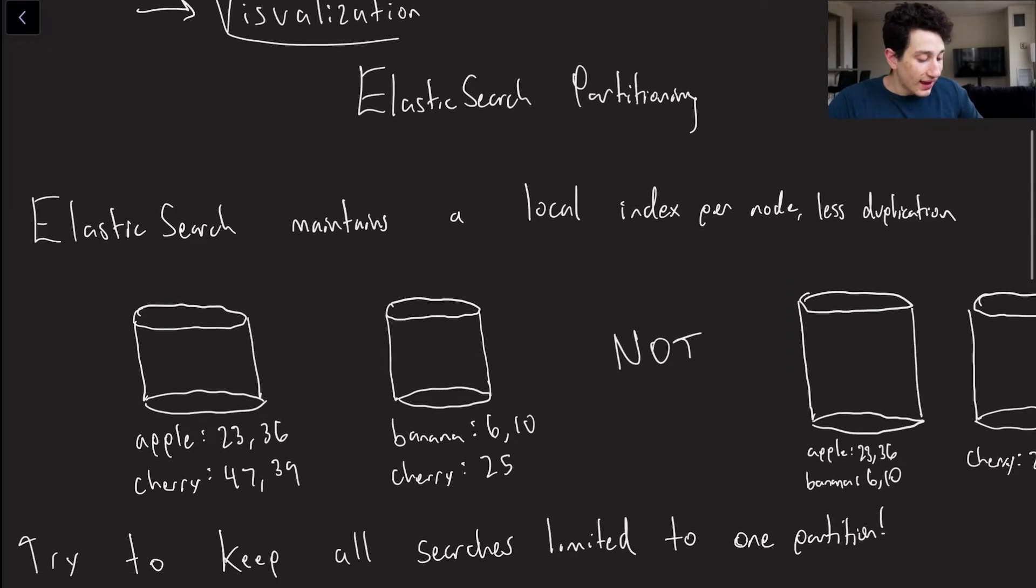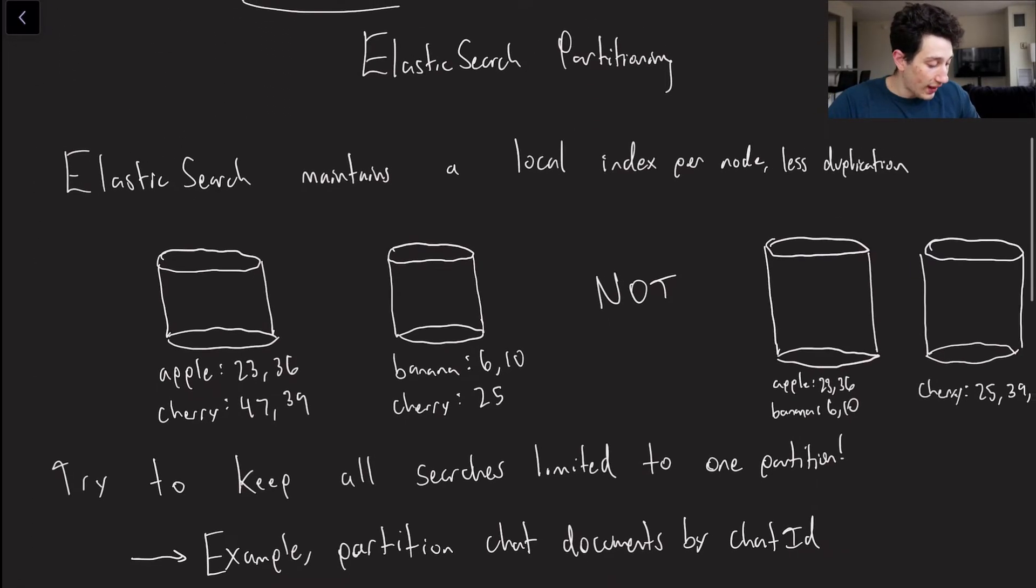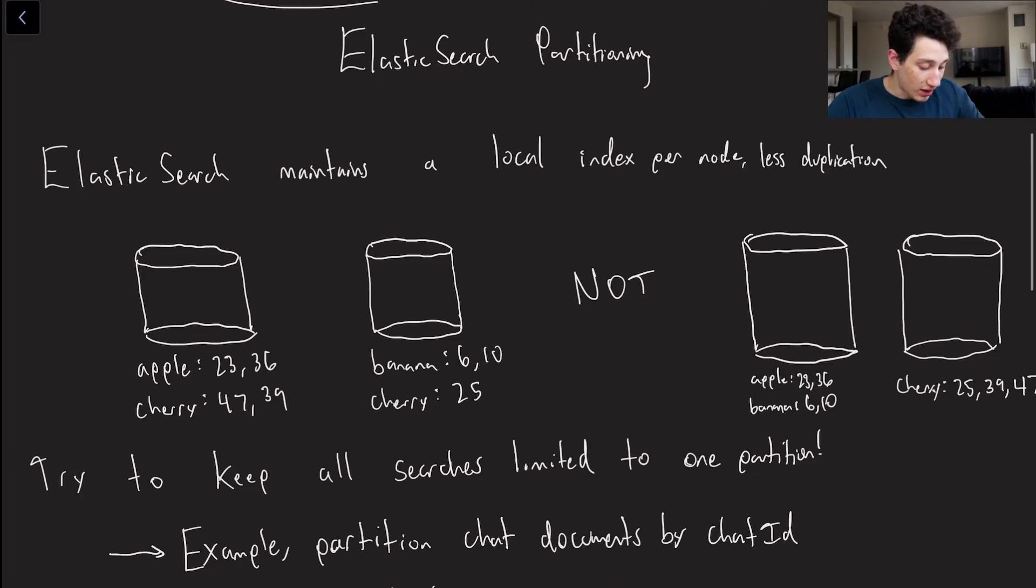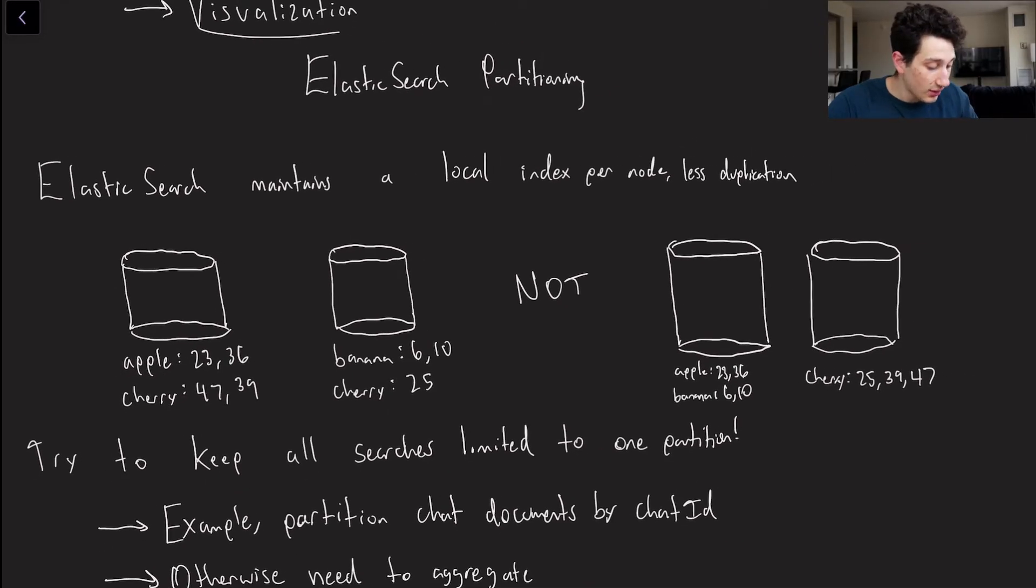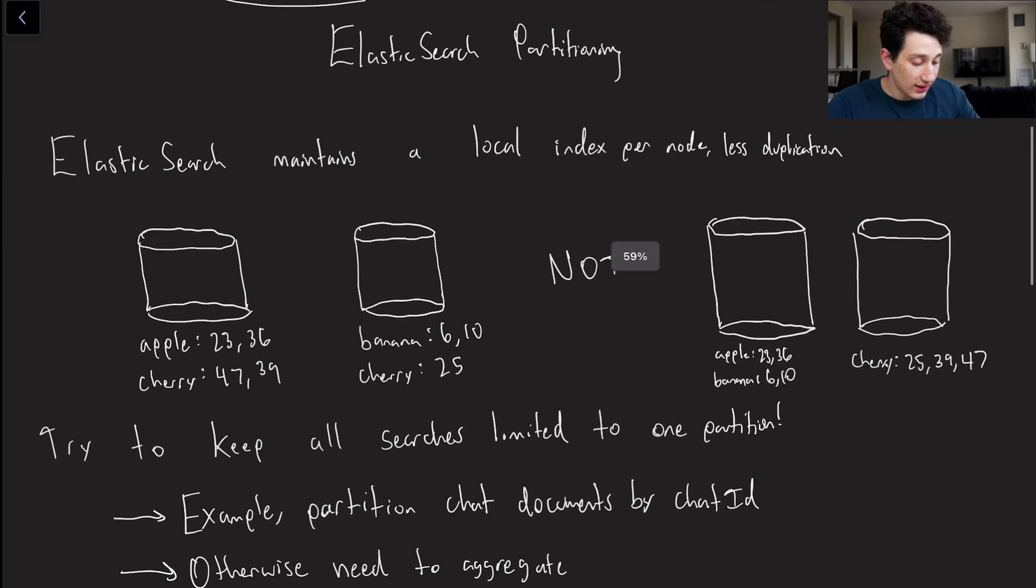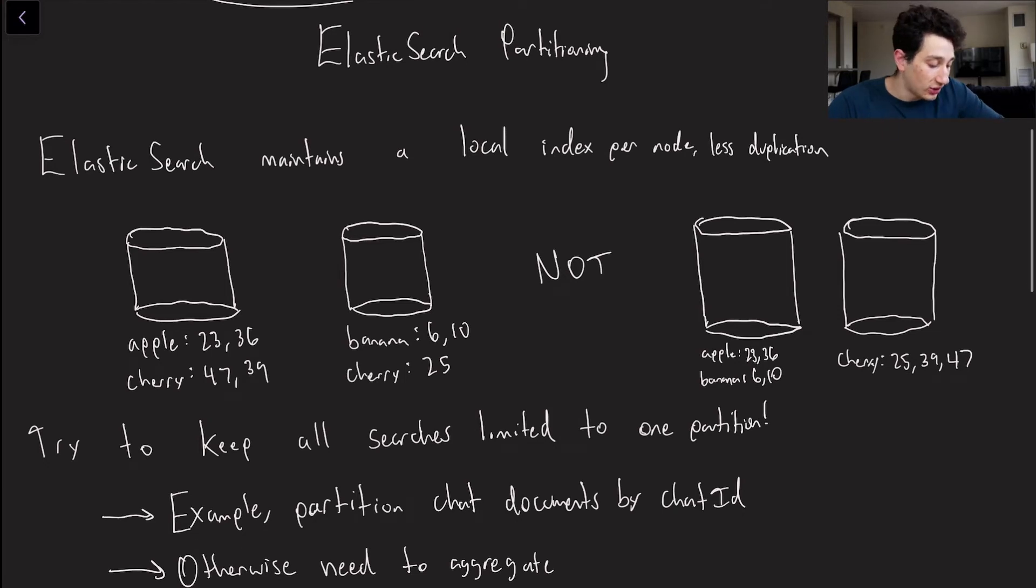Anyways, how does Elasticsearch actually work in a way that we can talk about how we best want to be using it? Well, Elasticsearch is actually going to be maintaining a local index. So if you remember from forever ago when we started talking about partitioning, we discussed what a local versus a global index was. Now a global index basically means that for a given key on one of our partitions we have all of the possible values for it.